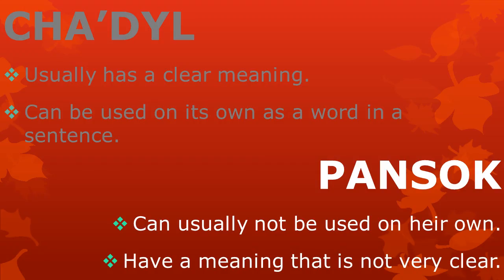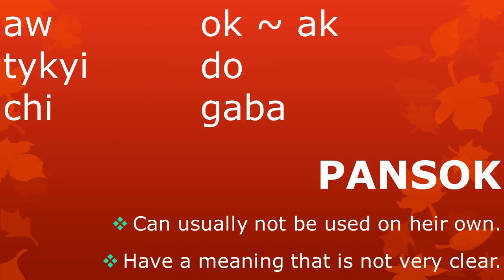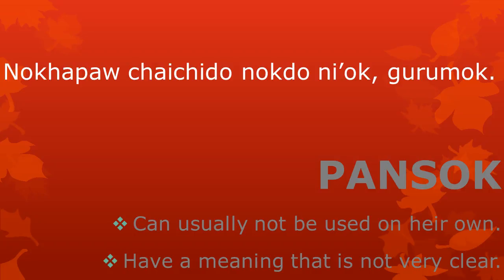Pansok, or bound parts in English, cannot be used on their own as words in a sentence, and they have a meaning that is not very clear and not easy to talk about. Examples of pansok are: ao, tekei, qi, ok, do, and gabah. Pansok cannot be used on their own but are combined with tzadl to make words, as in the sentence 'Nok hapao tzai chido nokk do ni ok grumok'. Here we see the pansok highlighted in green and blue color.